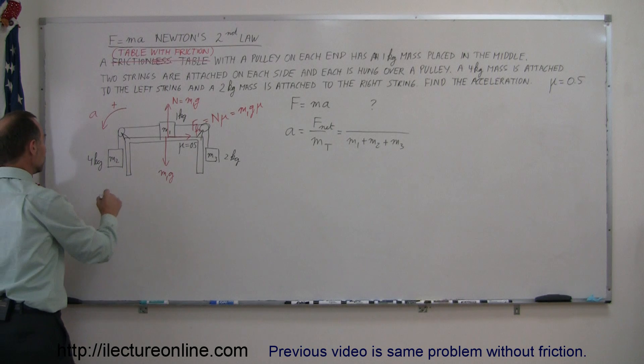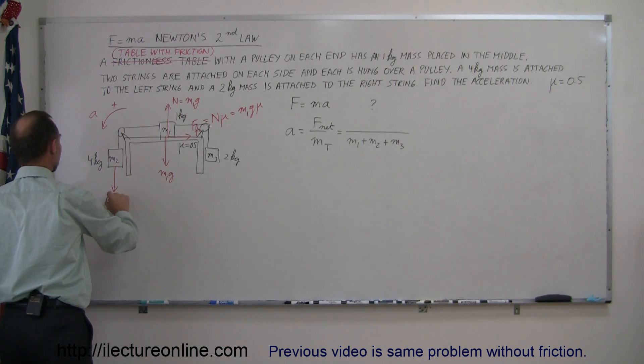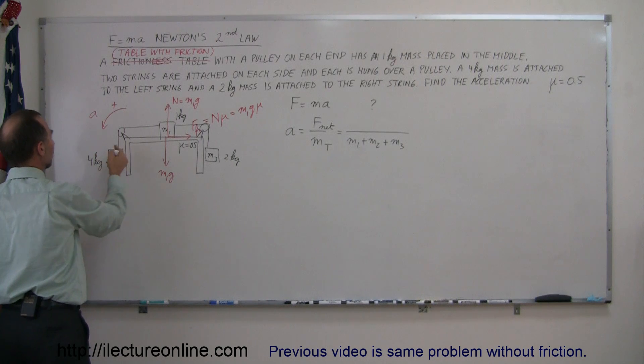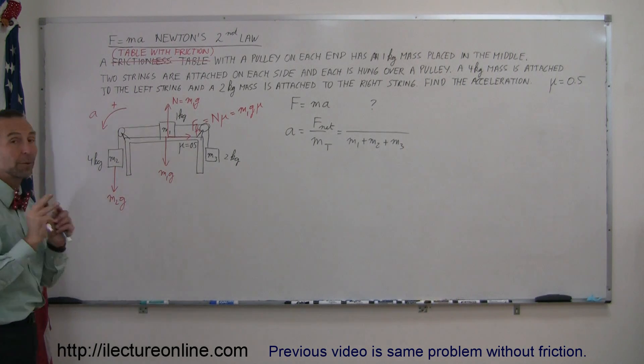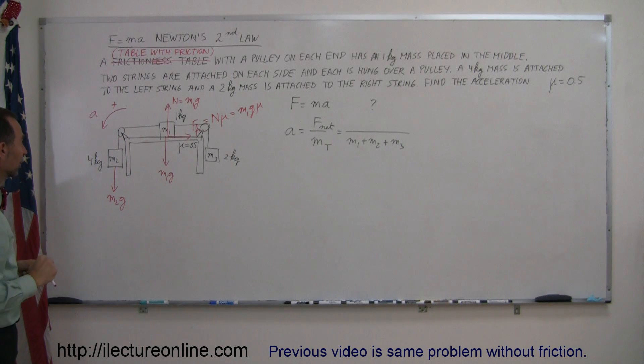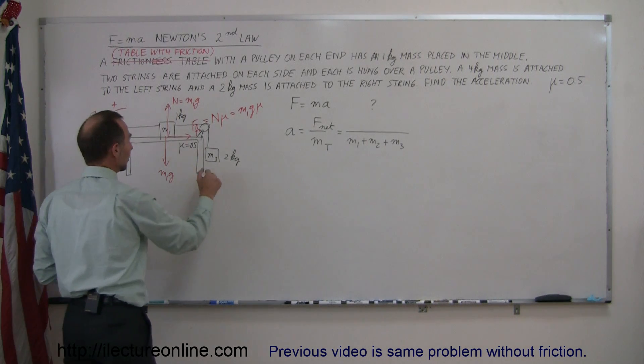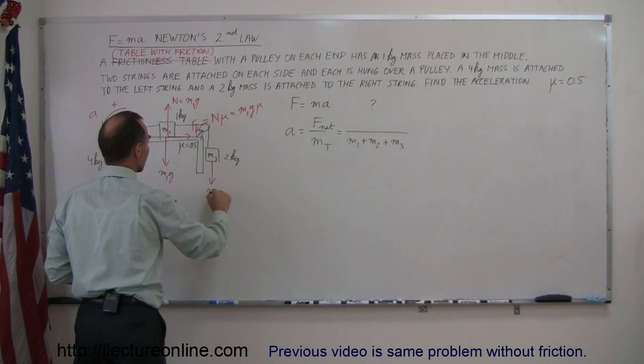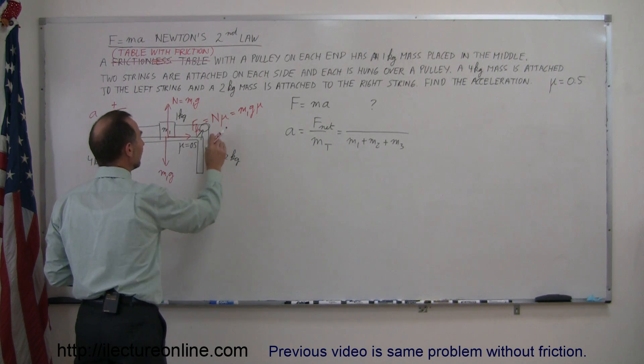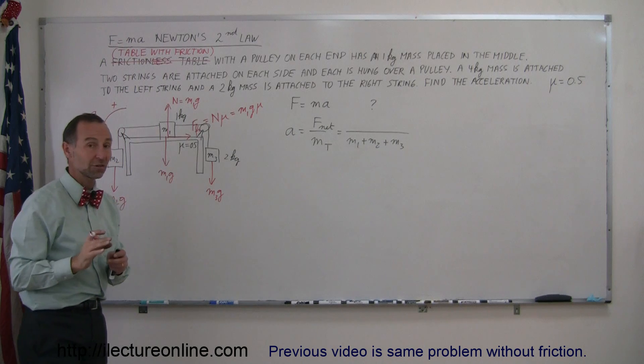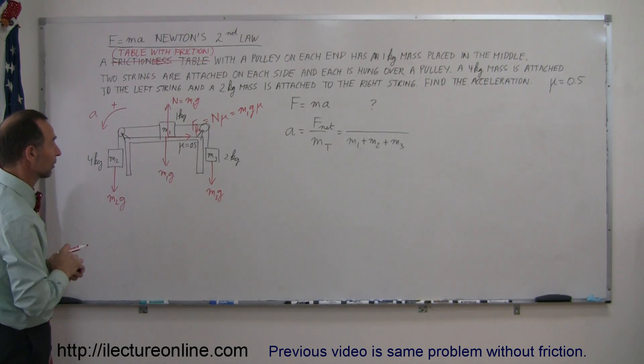The force acting on M2 is gravity pulling down, M2g. There's the tension in the string pulling back up, but since that's part of the system, we're not going to consider that, only external forces acting on the system. Over here we have M3g pulling down. We ignore the tension because it's part of the system.